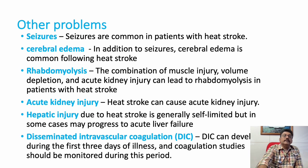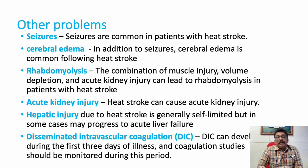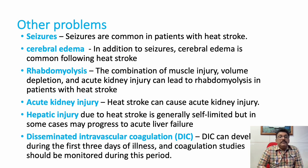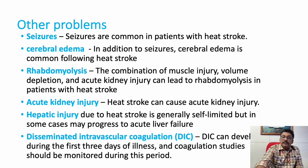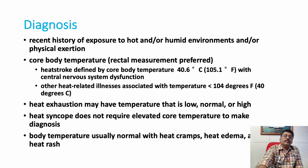Cerebral edema and seizures can occur. Rhabdomyolysis is especially important when a patient works in a hot environment for a long time — this elevates creatine kinase, and elevated muscle-related proteins can cause renal failure. Acute kidney injury, liver disease, and disseminated intravascular coagulation are all manifestations of multi-organ dysfunction syndrome seen in severe heat-related illness.